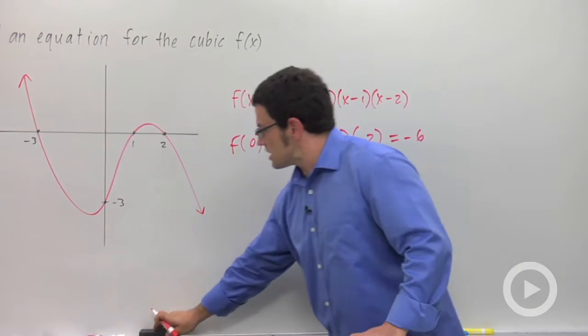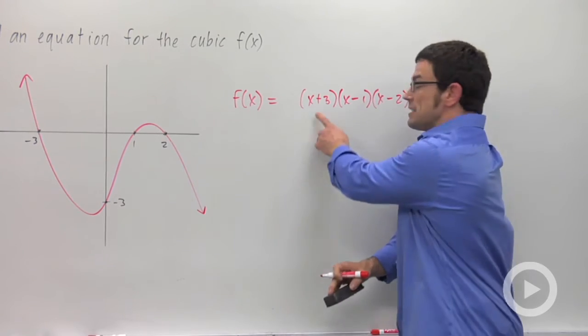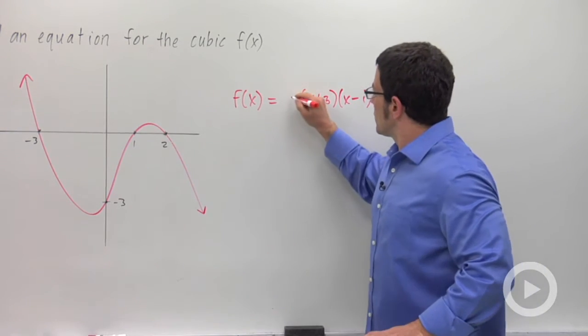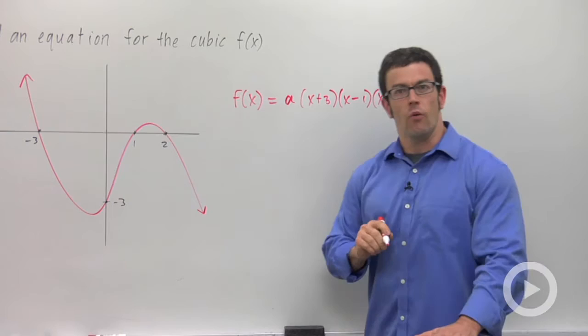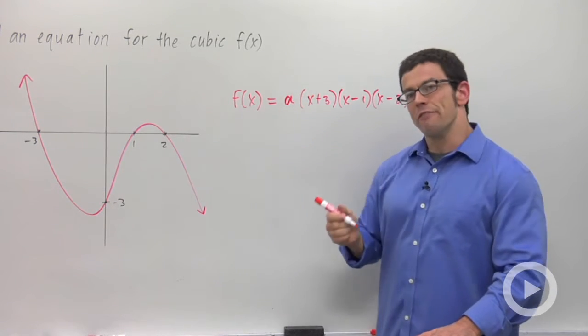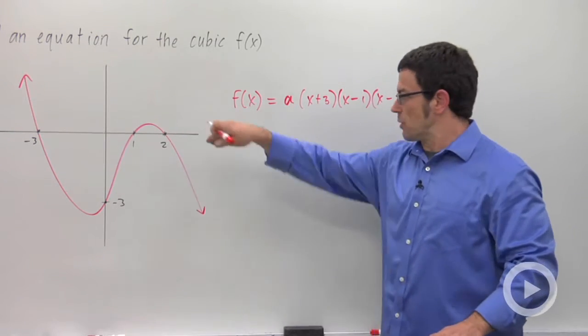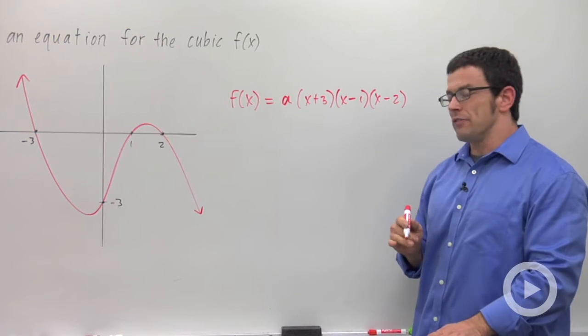So the best way to start is to start with the x-intercepts and then a little parameter a. We'll figure out what a is by using the y-intercept. But just make it a for now. It'll work out that a is going to be negative because the thing ends up going downward, but that'll all work itself out.